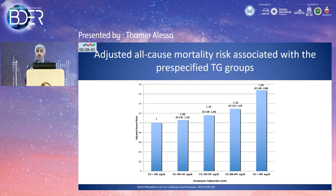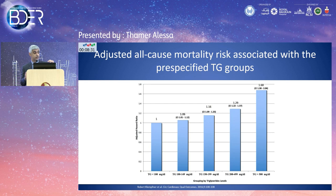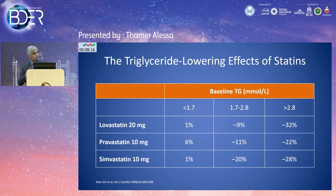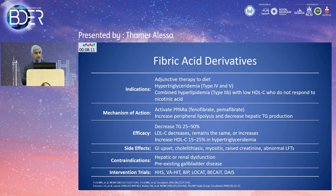Triglycerides are another cardiovascular risk marker, with multiple observational trials showing that higher triglycerides increase the hazard ratio for atherosclerotic disease. Statins can lower triglycerides by small percentages, with greater impact when baseline triglyceride is higher — for instance, if above 2.8 mmol/L, statin-driven lowering of VLDL particles has more effect. However, other specific approaches are needed to adequately address hypertriglyceridemia.